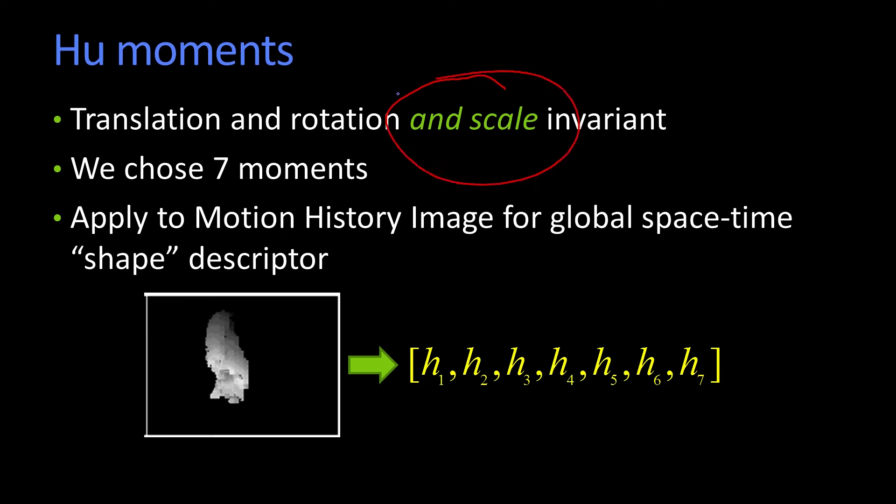the translation part is taken into account by just using central moments. We don't really need rotation invariant that much, because people don't tend to do their aerobics at a 45-degree angle.